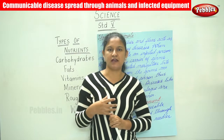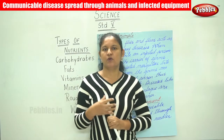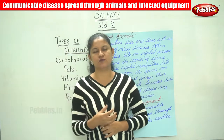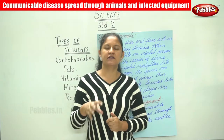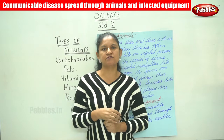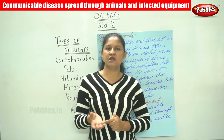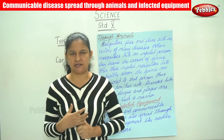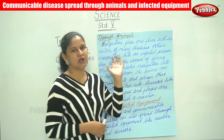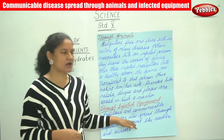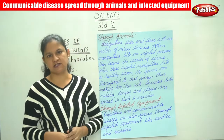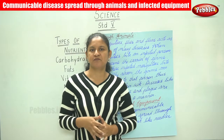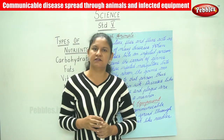The next route is through food and water. When an insect carrying germs sits on uncovered food, it deposits the germs on that food, and when we consume that food and water, we tend to fall sick. The other routes are through animals and through infected equipment. This covers the communicable diseases and how they spread.